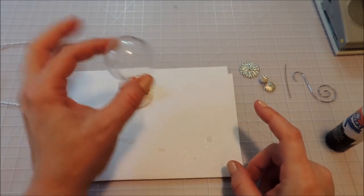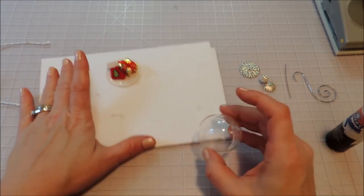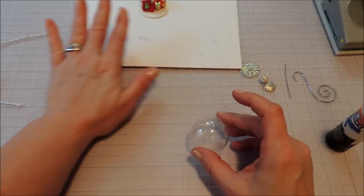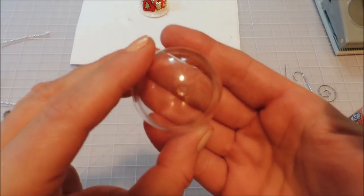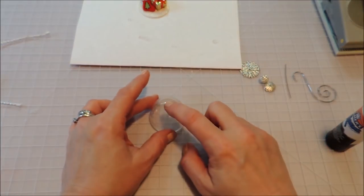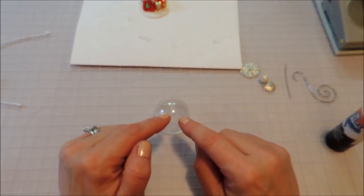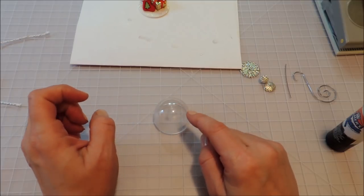Before we glue this on, we have to do everything that we need to do to get our toppers on there. I'm just going to set that aside for a minute. What I did was drill a tiny little hole in the top of there with my Dremel tool and my 1/32nd of an inch drill bit.